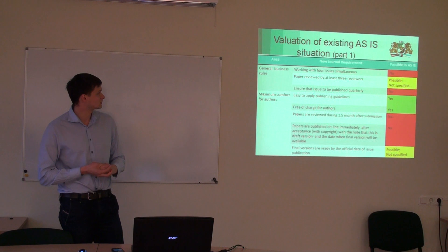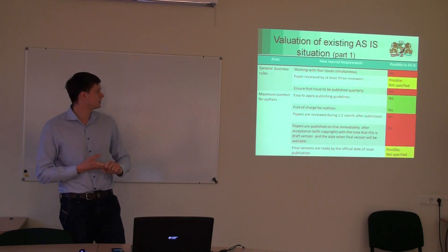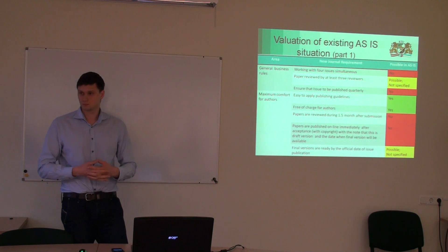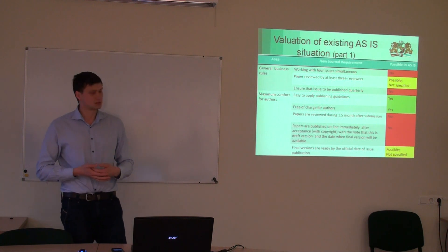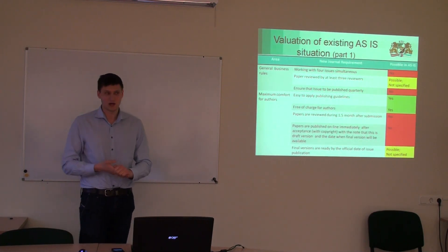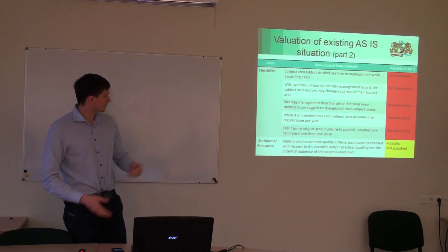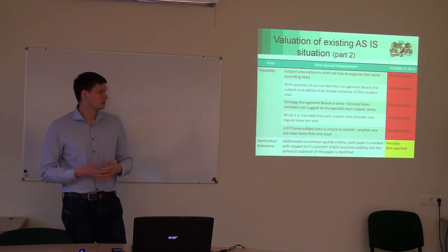What I have done as well is elicit requirements from the materials and compare them to the current model. I have four areas. The first part covers general business rules — we should have four issues working simultaneously, papers have to be reviewed by at least three reviewers, and issues should be published quarterly. You can see that basically some are marked 'no' or 'possible' but not specified in any of the diagrams. The same applies to maximum comfort for the author — some things are there but many are not. And extra flexibility and usefulness requirements are also largely red, not defined in the process.